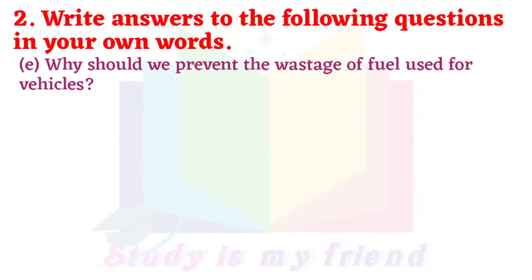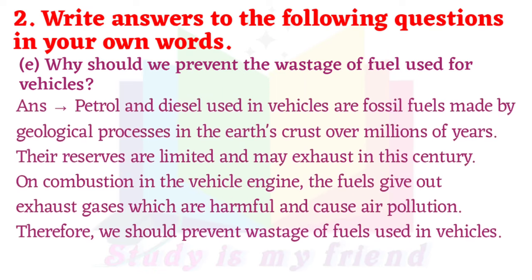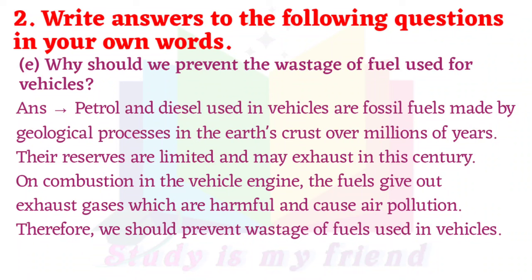E. Why should we prevent the wastage of fuel used for vehicles? Petrol and diesel used in vehicles are fossil fuels made by geological processes in the earth's crust over millions of years. Their reserves are limited and may be exhausted in this century. On combustion in the vehicle engine, the fuels give out exhaust gases which are harmful and cause air pollution. Therefore, we should prevent the wastage of fuels used in vehicles.